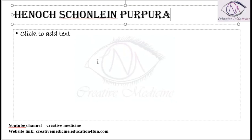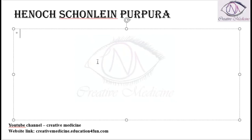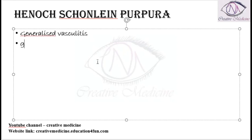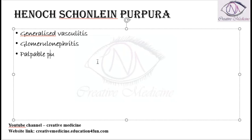In Henoch-Schönlein purpura, the patient will have generalized vasculitis. The patient presents with glomerulonephritis, and palpable purpura is seen in patients along with arthralgias. Abdominal pain can also develop in the patient.